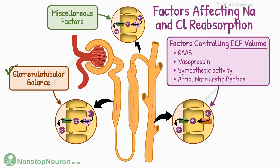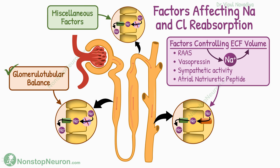Now let's see the effect of factors involved in control of extracellular fluid volume. The total sodium content of the body is the main factor regulating ECF volume. So the factors involved in regulating ECF volume do their job by regulating the sodium content of the body, and for that they mainly regulate sodium reabsorption in the renal tubule. In other words, we have a set of factors that come to the renal tubule to regulate sodium reabsorption to eventually regulate ECF volume. It will be clear in the dedicated video on ECF volume regulation.